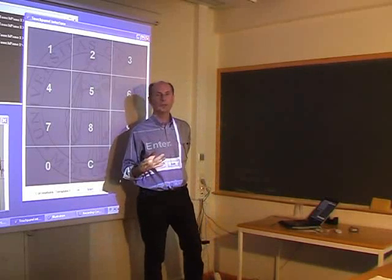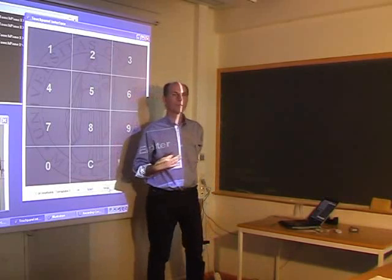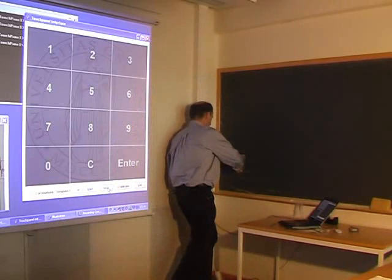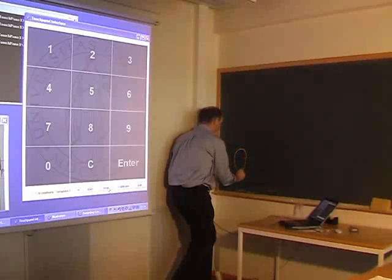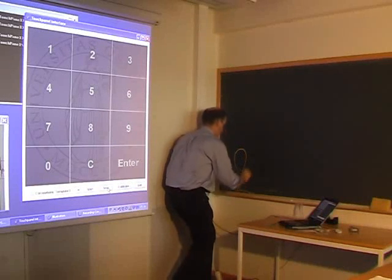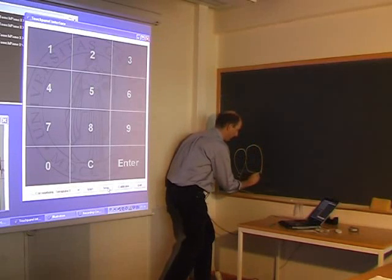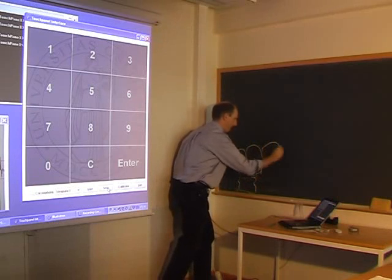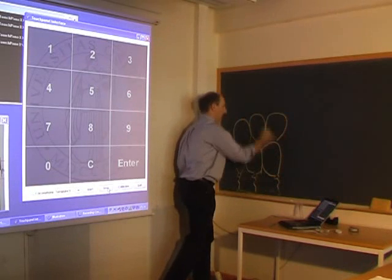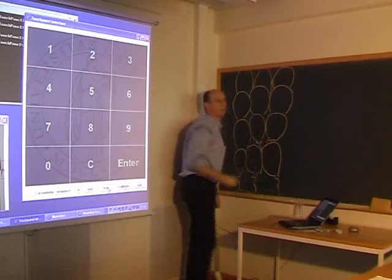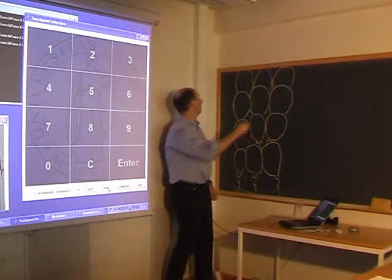But first I have to draw a keyboard on the board here. So I will start by drawing 12 bubbles for balloons. Then I put the numbers.